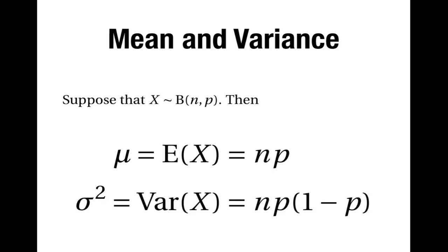It can also be proved that the variance, sigma squared, of the distribution is equal to n times p times 1 minus p.